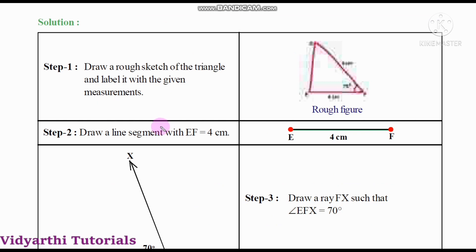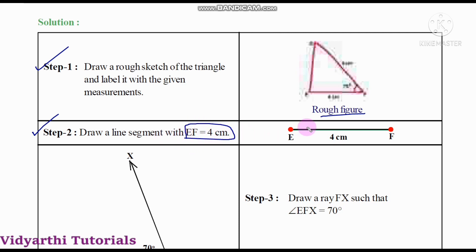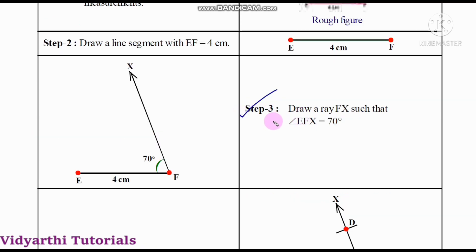To construct a triangle we need to follow some steps. Step one: draw a rough sketch of the triangle and label it with the given measurements. Step two: draw a line segment EF equal to 4 centimeters. Place the scale and draw the line segment of 4 centimeters.